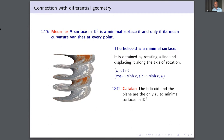Then in 1776, Monge showed the connection to differential geometry: the surface is minimal in the sense of Lagrange if and only if the mean curvature vanishes at each point. At any point, a surface has two principal curvatures, which are eigenvalues of the second fundamental form; their sum is the mean curvature and their product is the Gaussian curvature. The Gaussian curvature is negative or at most zero, since the mean curvature is zero.